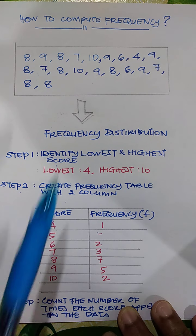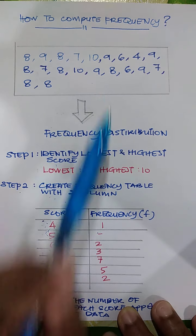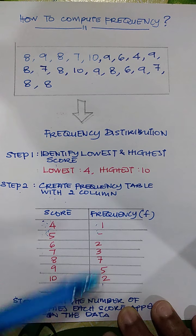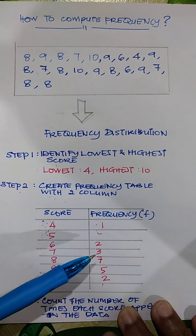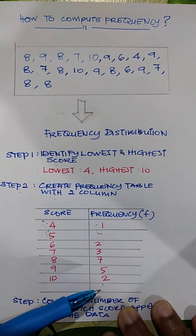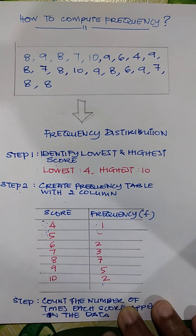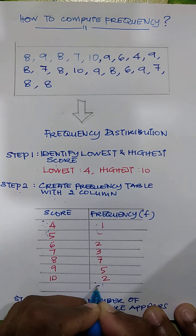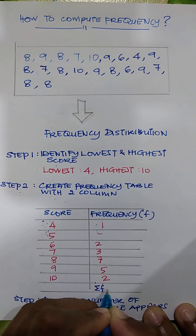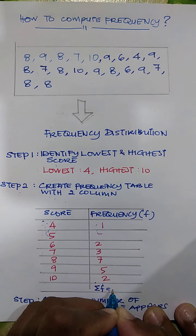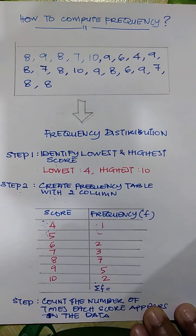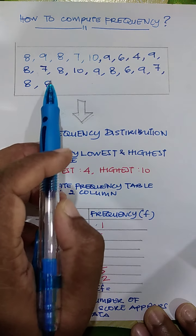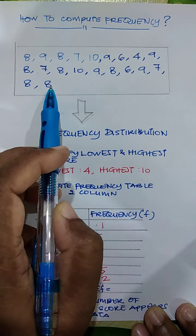zero. So we do the same thing until number 10 or for score 10. Score 10 appears how many times in your data? It appears twice, so you put 2. So when you add these frequencies, when you add 1 plus 2 plus 3 plus 7 plus 5 plus 2, you will get a total